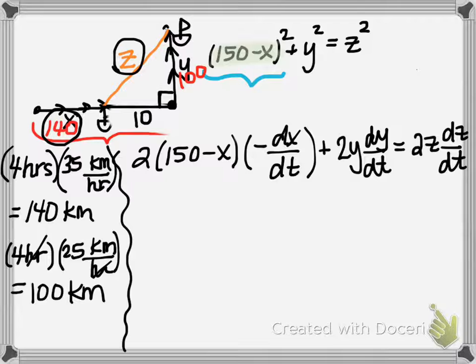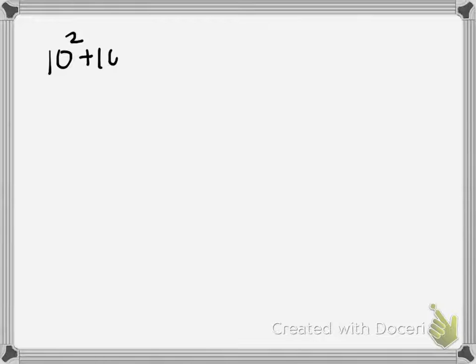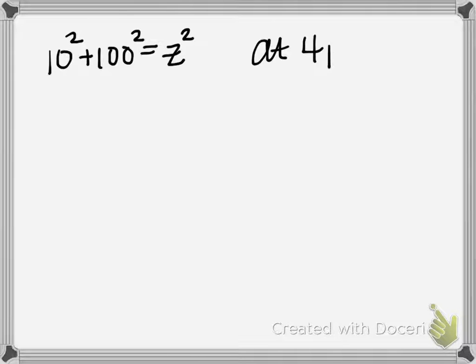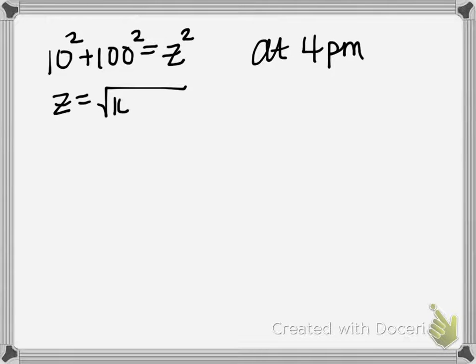The Pythagorean theorem gives 10² + 100² = z². Adding those together and taking the square root of both sides, we find z = √10,100. I'll leave it in this exact form to avoid rounding multiple times in the problem.